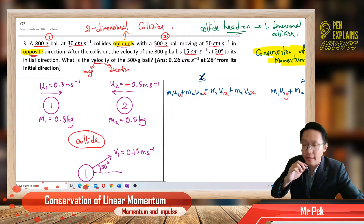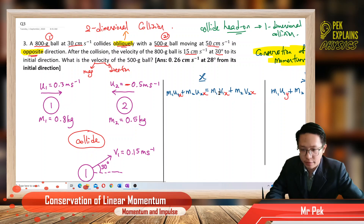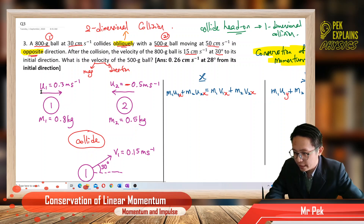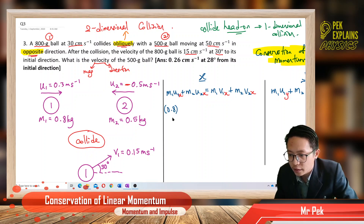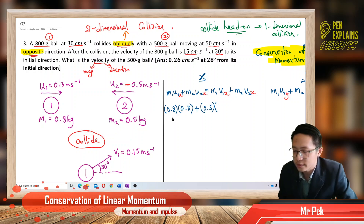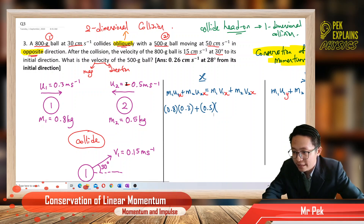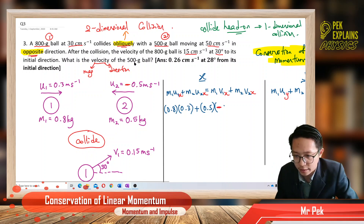Let us look at the x-component. Before the collision, all the velocity is in the x-component. So we have mass one, 0.8, and U1x is 0.3. Plus mass two, 0.5, and U2x — which is going to the left, so it's negative. You must remember to put the negative sign; many students forget the negative sign and get it wrong.